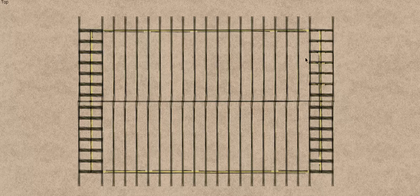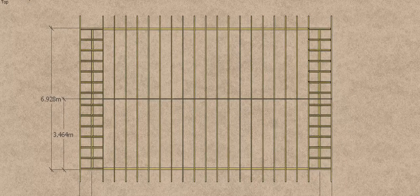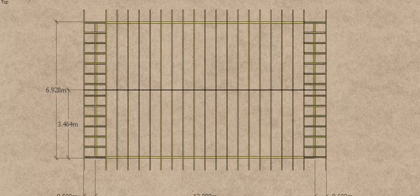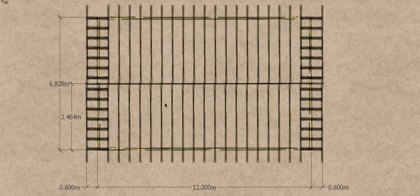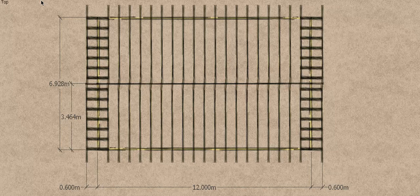Here you can see we have a gable roof, and here are the dimensions. This roof is 12 metres long and has a 600mm overhang on both sides. The width is not really important for this example; we need that more when we work out the length of the rafter.